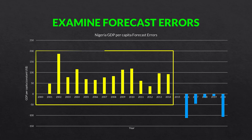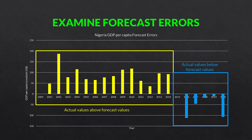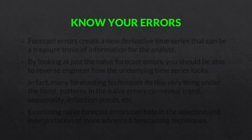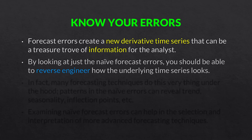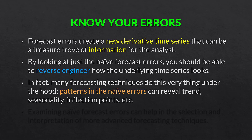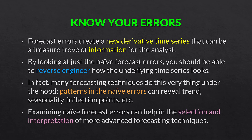Graphically, all the forecast errors about two thirds down the time series are positive, and then we have negative forecast errors for about the last third or so. The actual values are above the forecast values in the first portion, and then the actual values are below the forecast values in the latter portion. Forecast errors create a new derivative time series that can be a treasure trove of information. By looking at just the naive forecast errors, you should be able to reverse engineer how the underlying time series looks. Many forecasting techniques do this very thing under the hood. Patterns in the naive forecast errors can reveal trend, seasonality, inflection points, and so on.